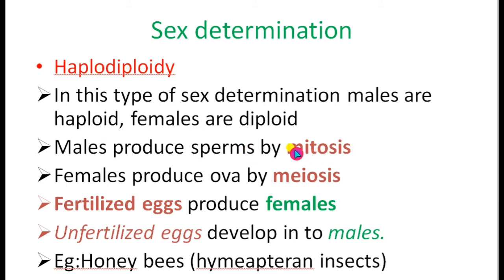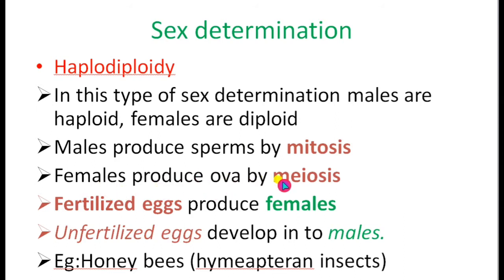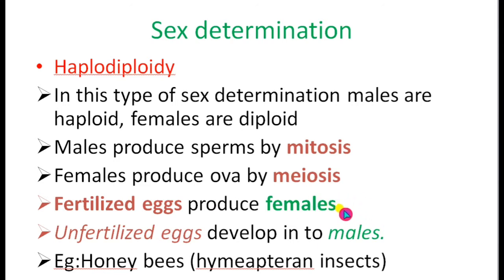Males produce sperms by mitosis — you have to remember this is the only case where reproductive cells are produced by mitosis and not by meiosis. Females produce ova by meiosis or reduction division. If the egg is fertilized with sperm, it produces females. Females are of two types: queens and workers, depending upon the food they are given.